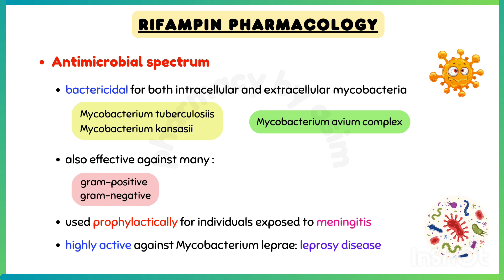Rifampin is effective against many gram-positive and gram-negative organisms, and is used prophylactically for individuals exposed to meningitis caused by meningococci or Haemophilus influenzae. Rifampin is also highly active against Mycobacterium leprae, which causes leprosy disease.